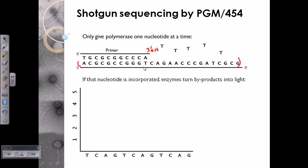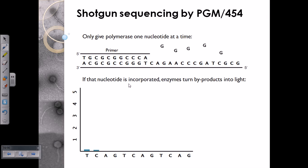For example, we add only T's first. If the first base is C, the complement should be G, so T will not bind and is washed away — no signal. We then add A — A does not bind with C, so it's washed away. We add G, and G binds with C because they are complementary. Polymerization occurs and we see a fluorescent peak for G on the graph.